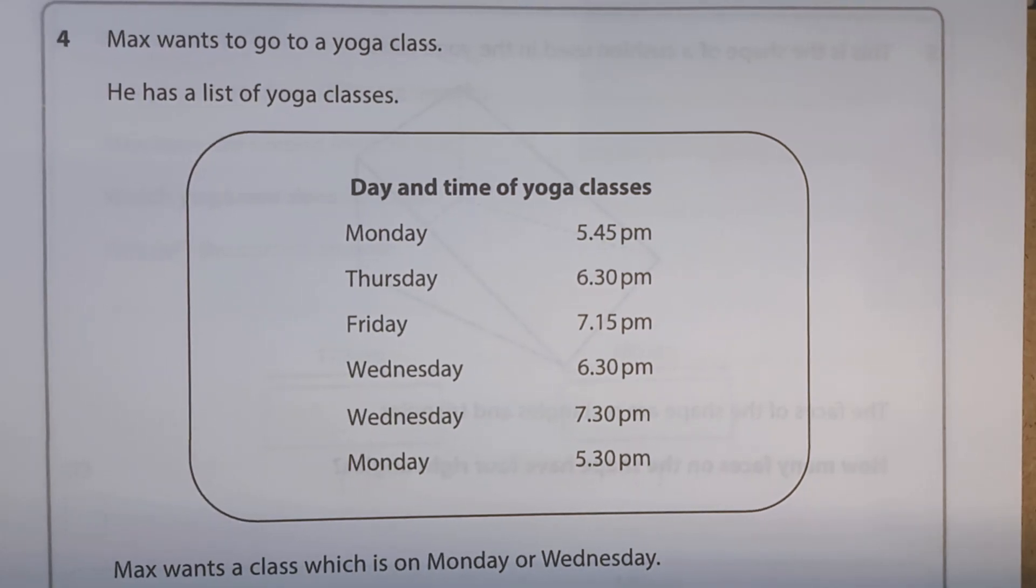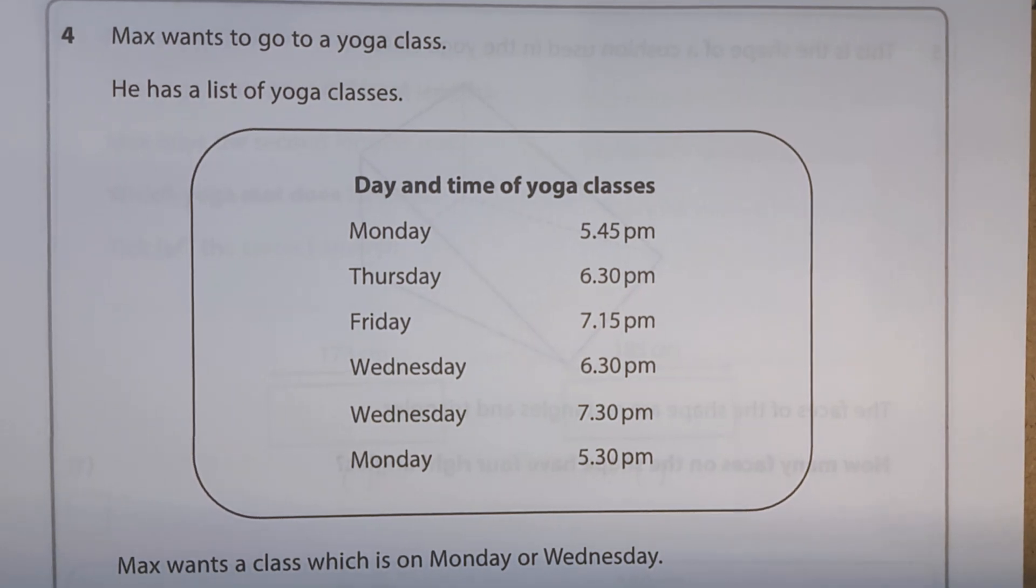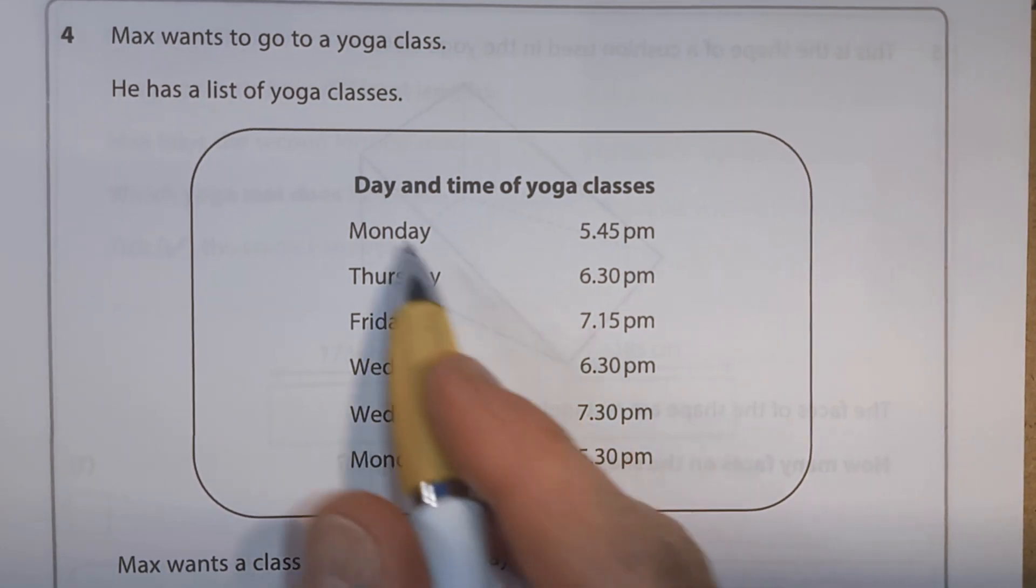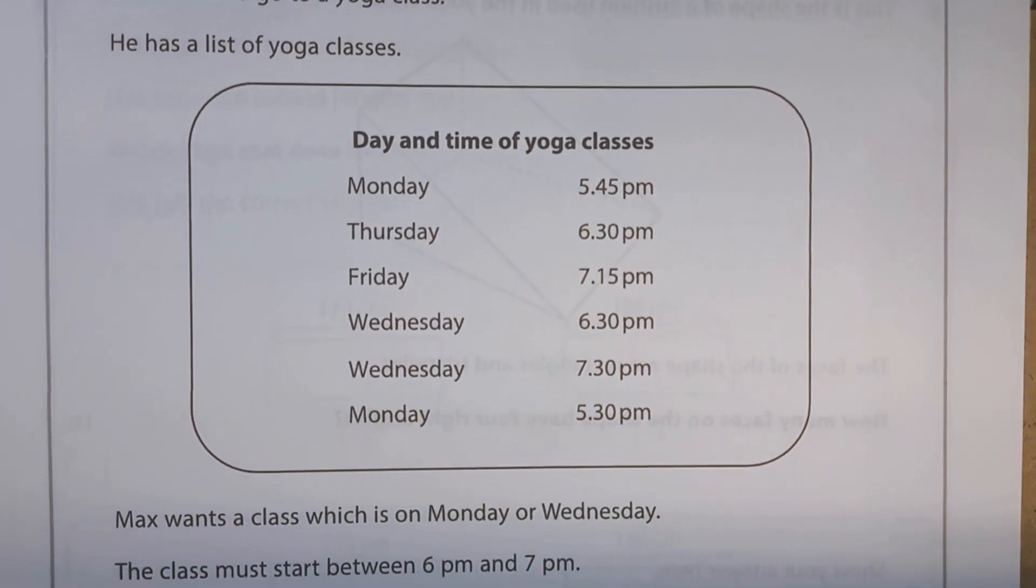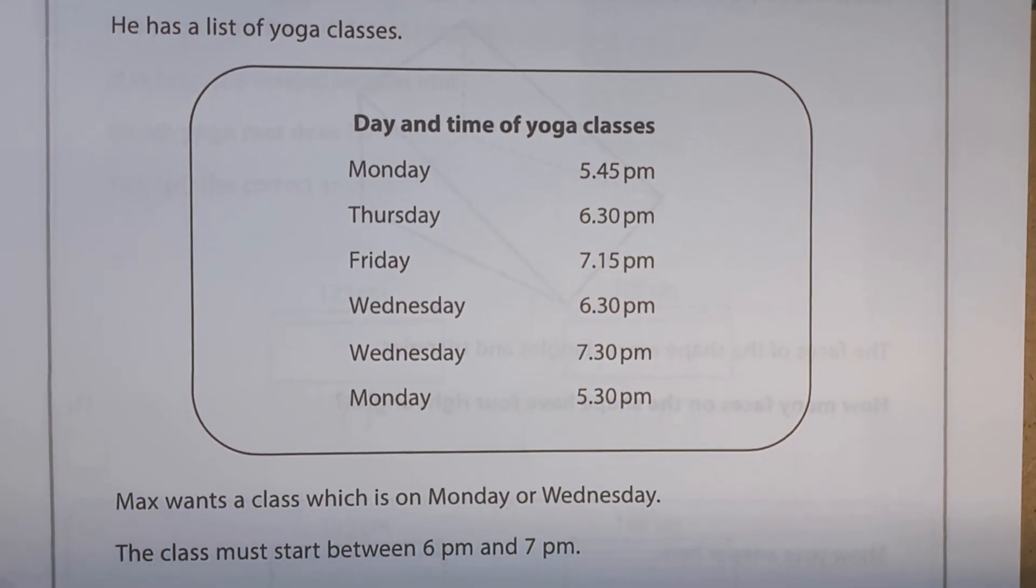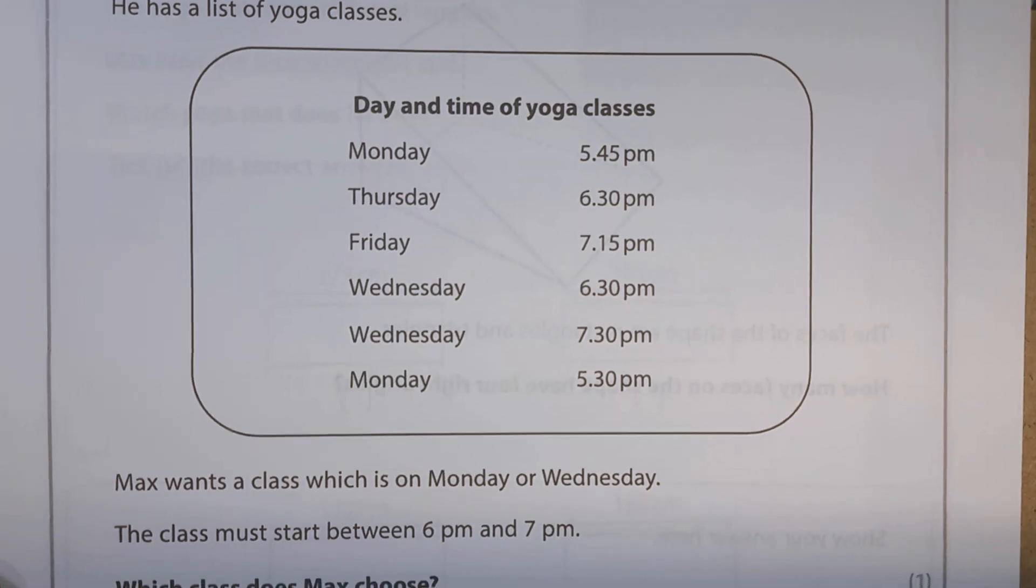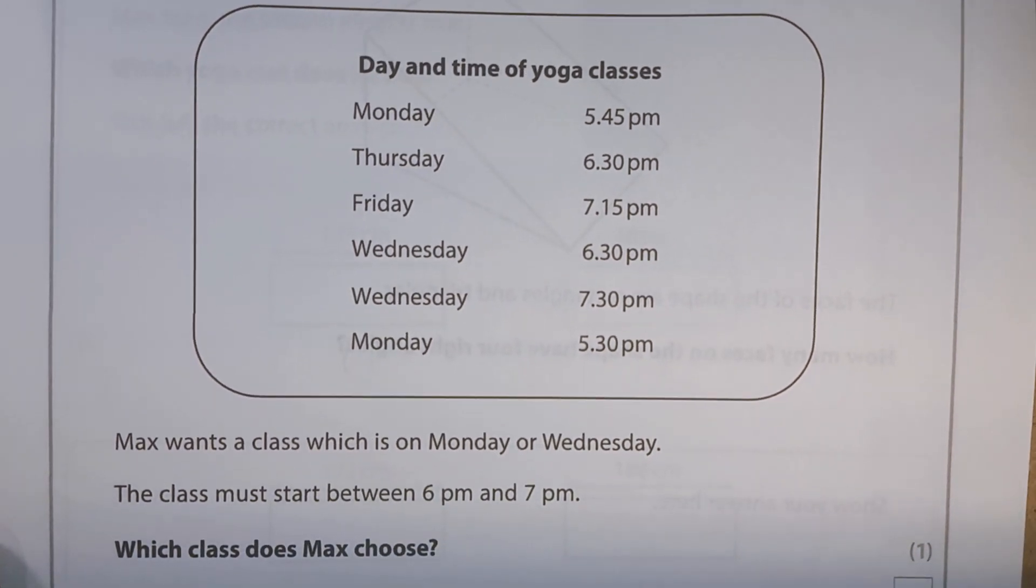Question 4. Max wants to go to a yoga class. He has a list of yoga classes. And here we've got the day and time of yoga classes. So we've got Monday, Thursday, Friday, Wednesday, and the times for each of them. Max wants a class which is on Monday or Wednesday.